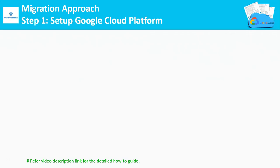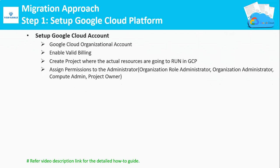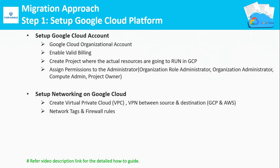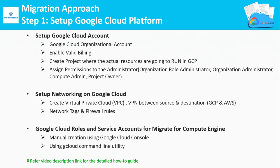Step 1: Set up Google Cloud Platform for migration. First, you need to create an organizational account with a valid billing, create projects underneath your GCP account, and assign corresponding roles and permissions to your administrator who is going to execute this migration. Second, you need to set up your networking in GCP by creating VPC, VPNs, firewall rules, and so on. Lastly, you need to create a service account and relevant roles for Migrate for Compute Engine. You can refer to the link given in the video description for each step of the migration approach.